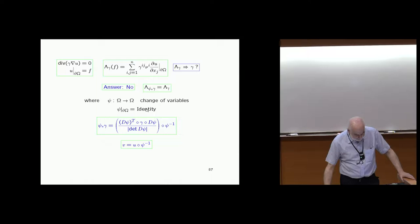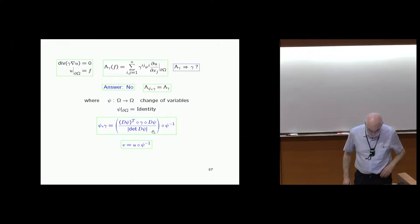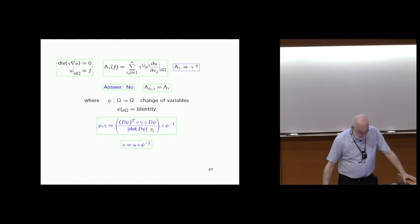This non-uniqueness involves the push-forward, which in terms of matrices means: the gradient of psi composed with gamma, composed with the transpose of the Jacobian of psi — where the Jacobian is the matrix of the differential — divided by the determinant.